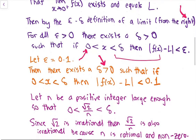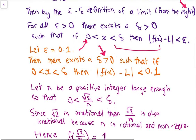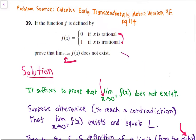We'll let n be a positive integer large enough so that √2/n is less than delta. Since n is positive, √2/n will also be greater than 0. The reason we do this is that √2 is known to be irrational, and when you divide it by n — a positive integer, which is rational and non-zero — √2/n will also be irrational. So f(√2/n) = 1, using the definition that f(x) = 1 when x is irrational.